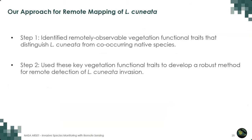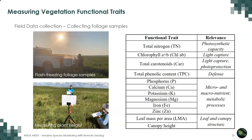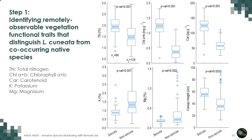To achieve the first step, we went to the field and collected a lot of leaf samples. We harvested them and sent them to the lab to quantify a long list of vegetation functional traits. Then we did statistical analysis to identify which traits help us distinguish Lespedeza cuneata from native species. At the end, we identified six traits: total nitrogen, chlorophyll content, carotenoids, potassium, magnesium, and canopy height. These are the traits we thought are useful for distinguishing Lespedeza cuneata from native plants.